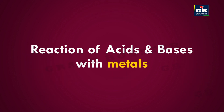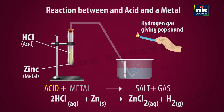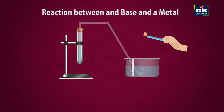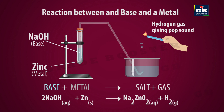Reaction of acids and bases with metals. When an acid reacts with a metal, it gives rise to salt and hydrogen gas. When a base reacts with a metal, it also gives rise to salt and hydrogen gas, but all metals may not react with bases in the same way.